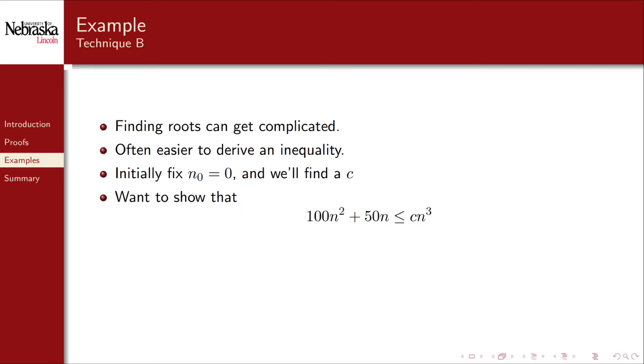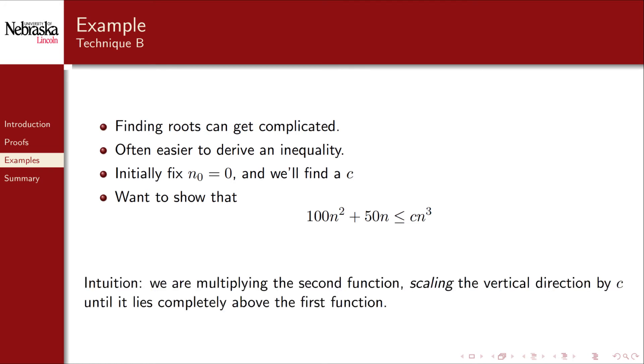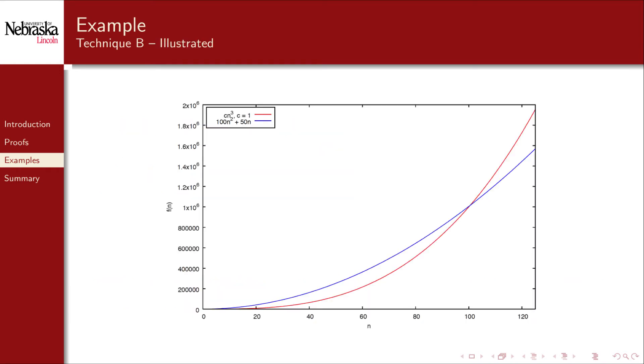We want to show that 100 n squared plus 50 n is less than or equal to c times n cubed. The intuition behind this is that we're multiplying the function on the right hand side and scaling it vertically by a factor of c until it lies completely above the function. To illustrate this, here's the plot from before for c being 1.